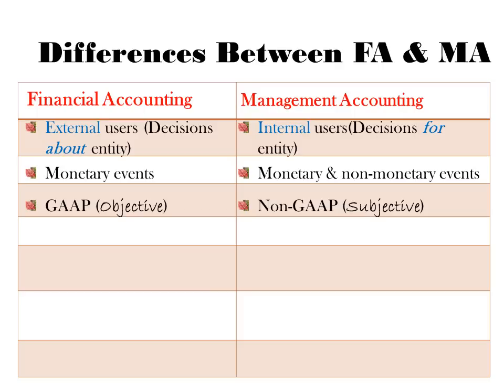As far as financial accounting is concerned, the income statement heading says 'income statement for period ended,' and that period is normally one year or one accounting period. Management accounting, on the other hand, does not have to wait until year-end. We do statements on demand — when management wants a statement, that's when they get it.